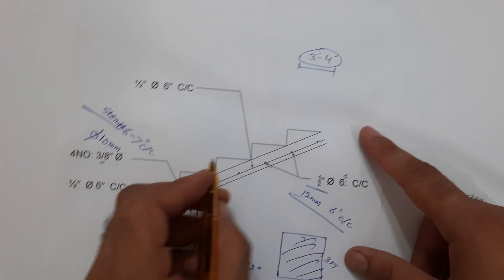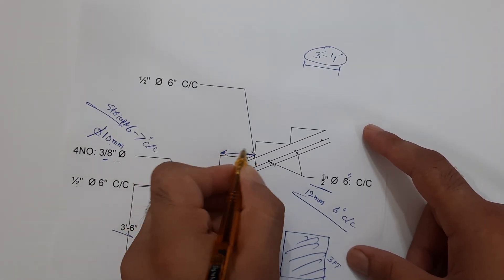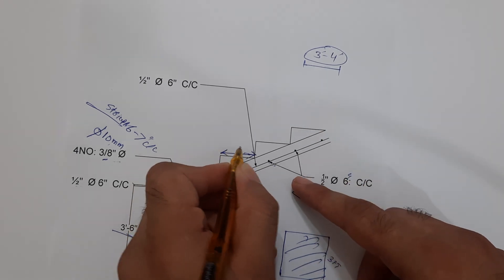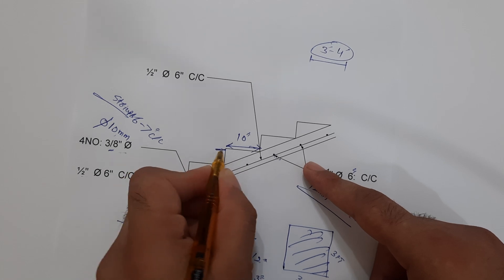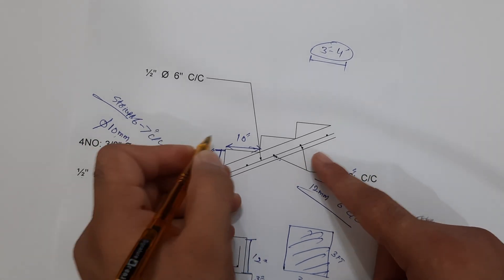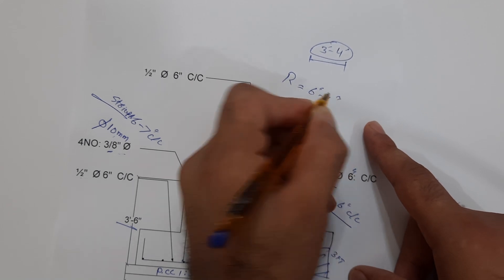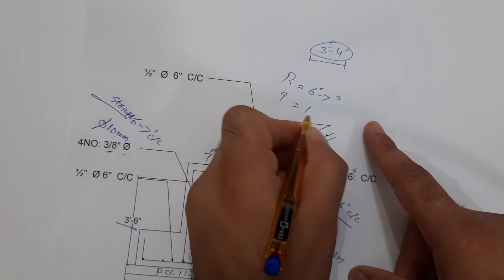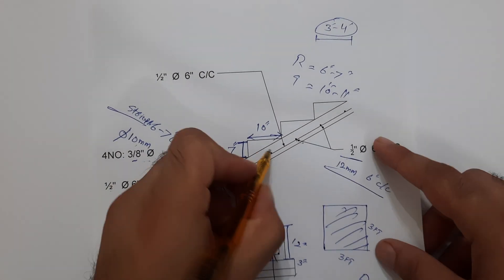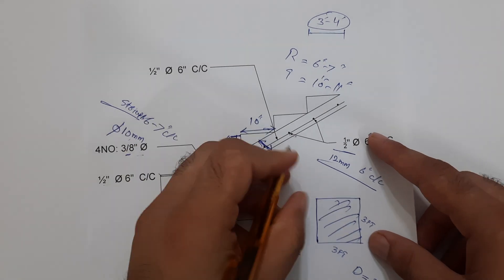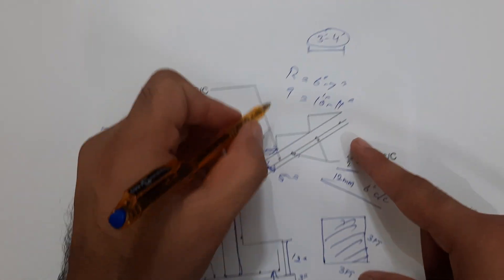Next guys, come to the riser and tread, okay. So this is tread and the tread width should not be less than 10 inches, okay, and the depth should not be more than seven inches. But normally you can keep the riser up to six to seven inches and the tread you can keep from 10 to 11 inches, okay. So this is the important information. And the thickness of this waist should not be less than five inches, okay.